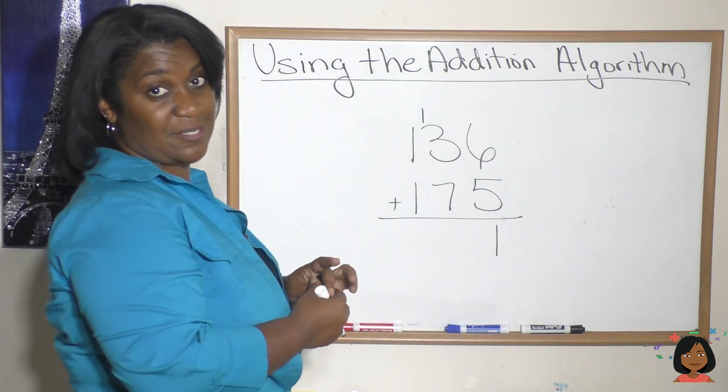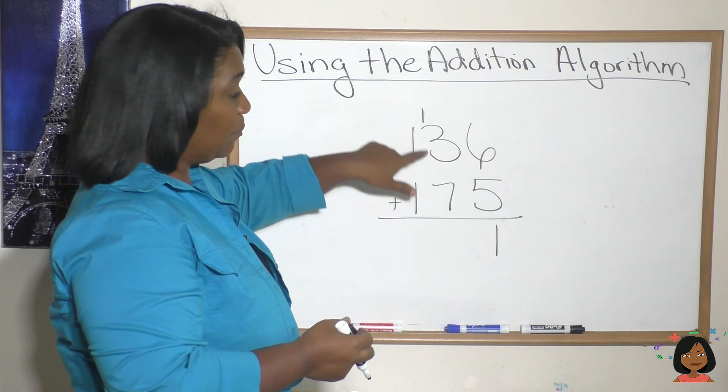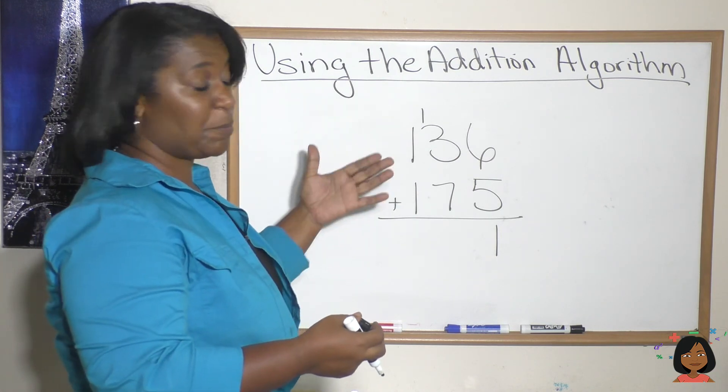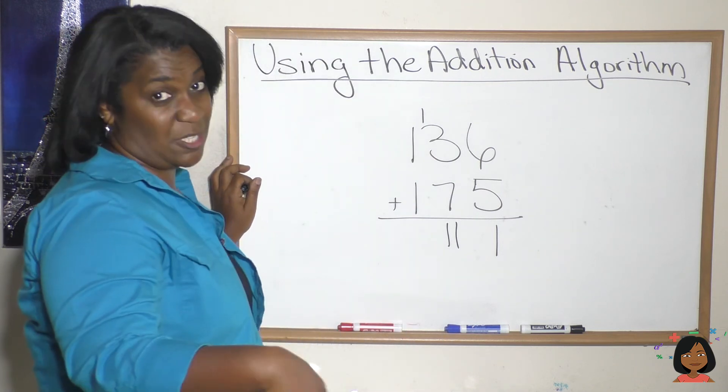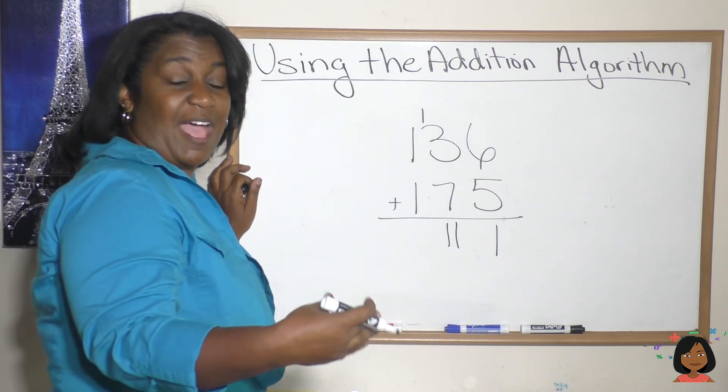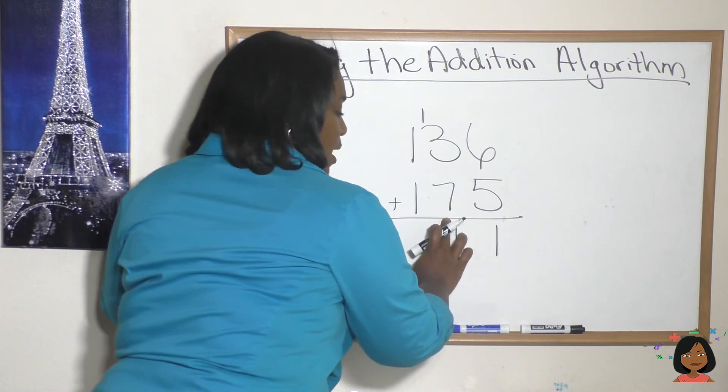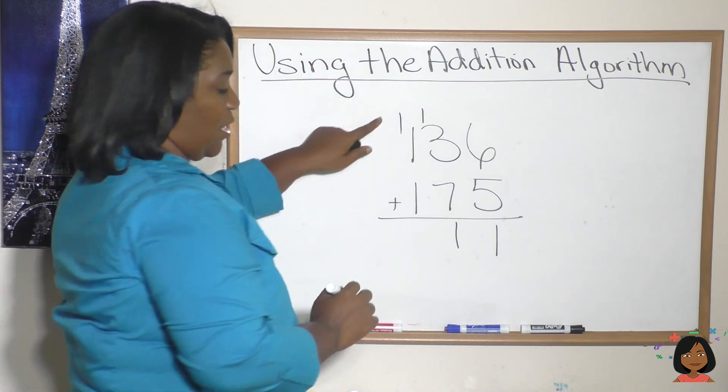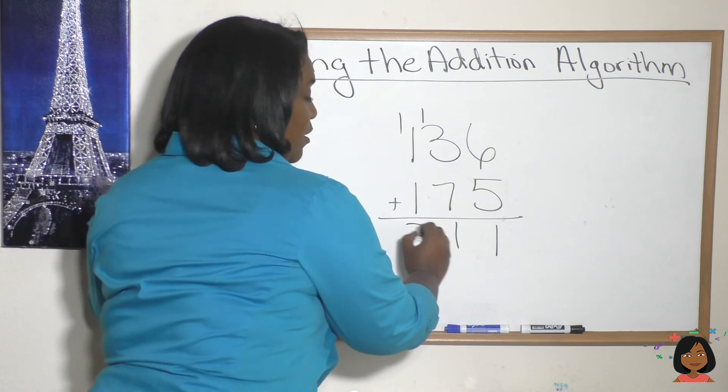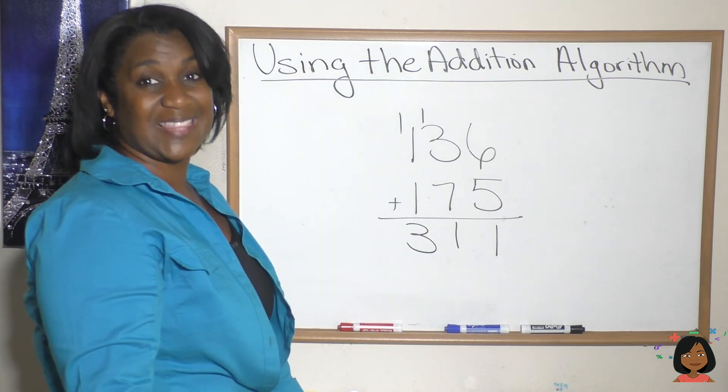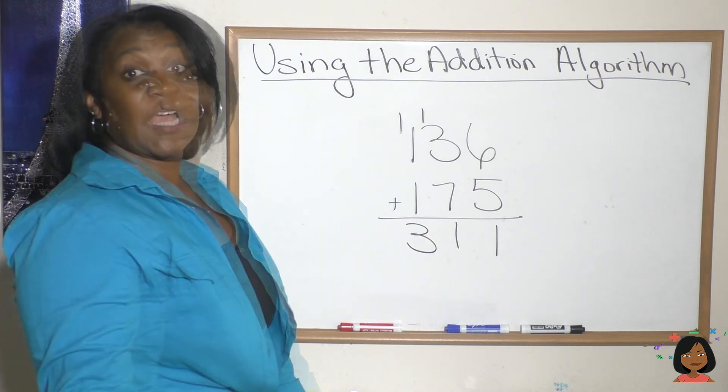Now I could write eleven here, but since it's more than ten, let's exchange that for a hundred dollar bill and bring it over to the hundreds place. 1 + 2 + 3, three hundred eleven dollars is your answer.